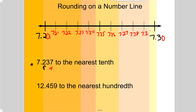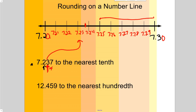Continuing up to seven and twenty-nine hundredths — well, seven and two hundred thirty-seven thousandths has a three in the hundredths, so it matches up right around seven and twenty-three hundredths. If you imagine ten little marks in between, it would be right about here. Anything from the midpoint rounds up, and anything just before it rounds down, so seven and two hundred thirty-seven thousandths rounds to seven and two tenths.